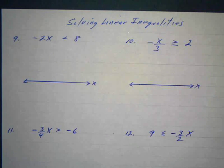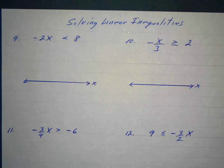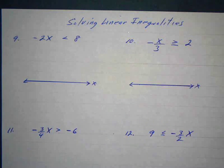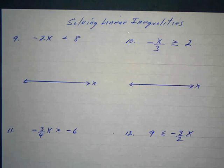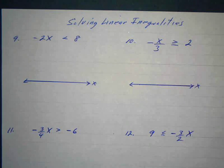We've talked about adding and subtracting positive or negative numbers on both sides of an inequality — that's just like an equation. We've also talked about multiplying or dividing both sides by the same positive number, and that doesn't change the direction of the inequality. But if we multiply or divide by a negative number, we need to change the direction of the inequality.